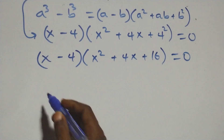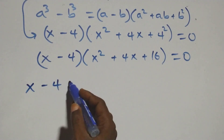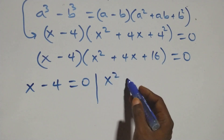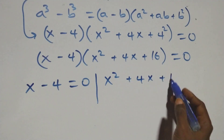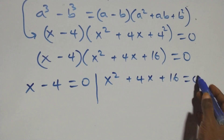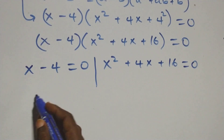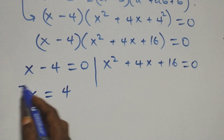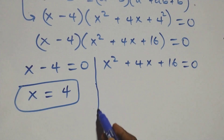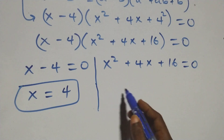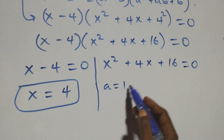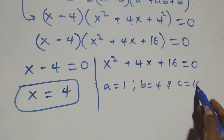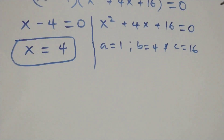Then here we have two possible cases: first, x minus 4 equals to 0, or we have x squared plus 4x plus 16 equals to 0. From the first sub-case, we have x equals to 4, which is also a real solution. Then here also we have a quadratic equation where a equals to 1, b equals to 4, and c equals to 16. Applying the quadratic formula.